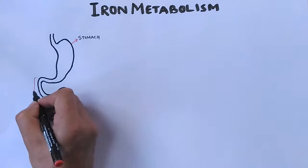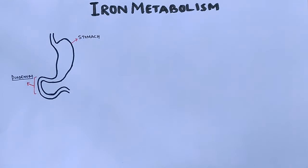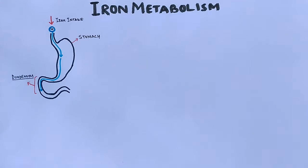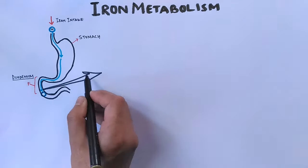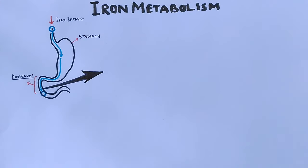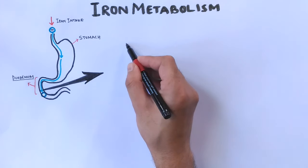Now first, let's discuss the first two processes which includes the iron intake and absorption. If we draw the structure of stomach and small intestine, we see the iron is supplied from the food we take. The iron passes through stomach and when it reaches the duodenum part of the small intestine, it gets absorbed from here.